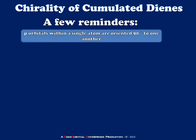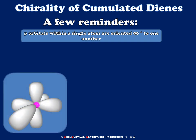The first is that p orbitals within a single atom are all oriented at 90 degrees to one another. So they look something like this, in which all of the orbitals have a 90 degree angle, so they're all at a right angle to one another.